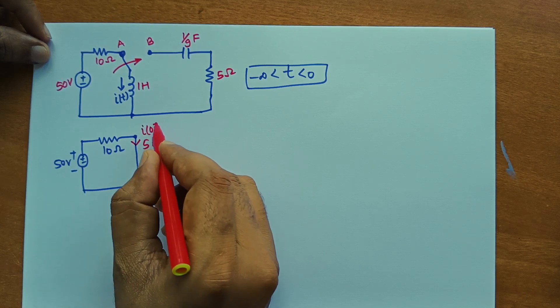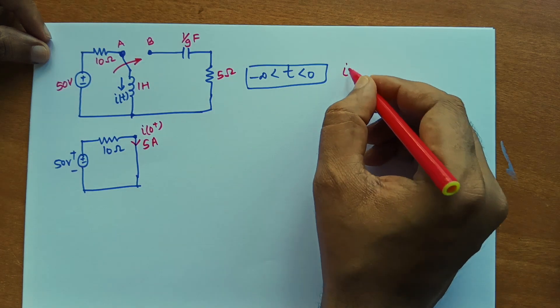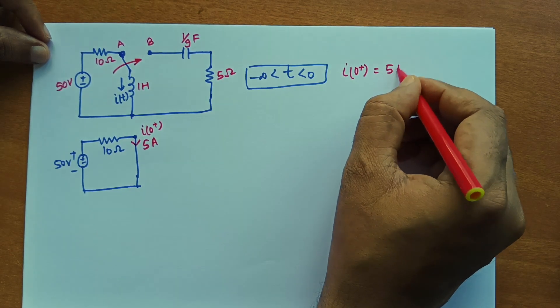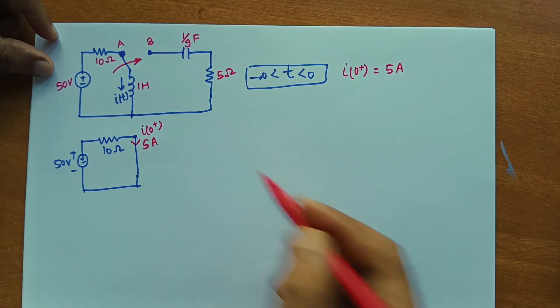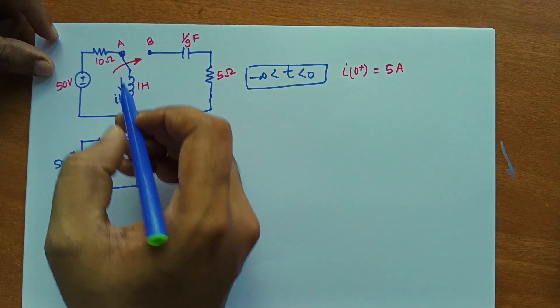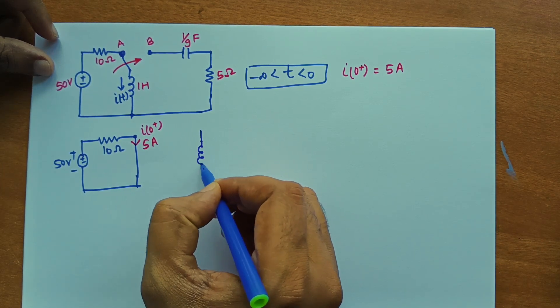Initially. That means at I0 plus it will be 5 amps. So we can write those initial conditions. So I0 plus will be 5 amps when this switch is on. So we can make that new circuit at t equal to 0. The circuit will become like this.